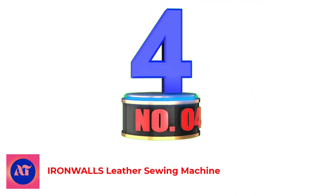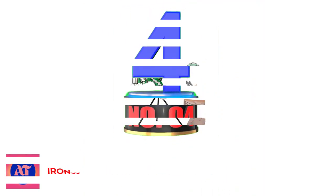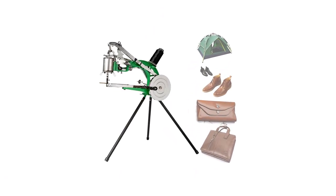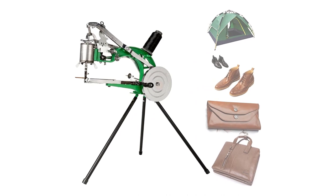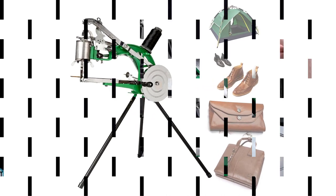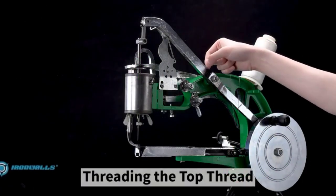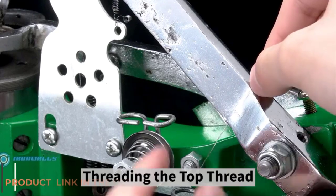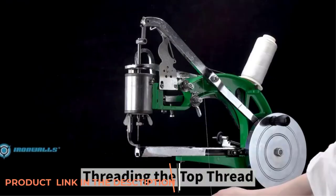Number 4: IRONWALLS Leather Sewing Machine. IRONWALLS Cobbler Sewing Machine is known to be one of the best cobbler sewing machines. It is a strong, tough, and long-lasting machine that allows you to perform multiple tasks expeditiously and smoothly. You can use this machine with nylon and cotton lines with high sewing thicknesses.